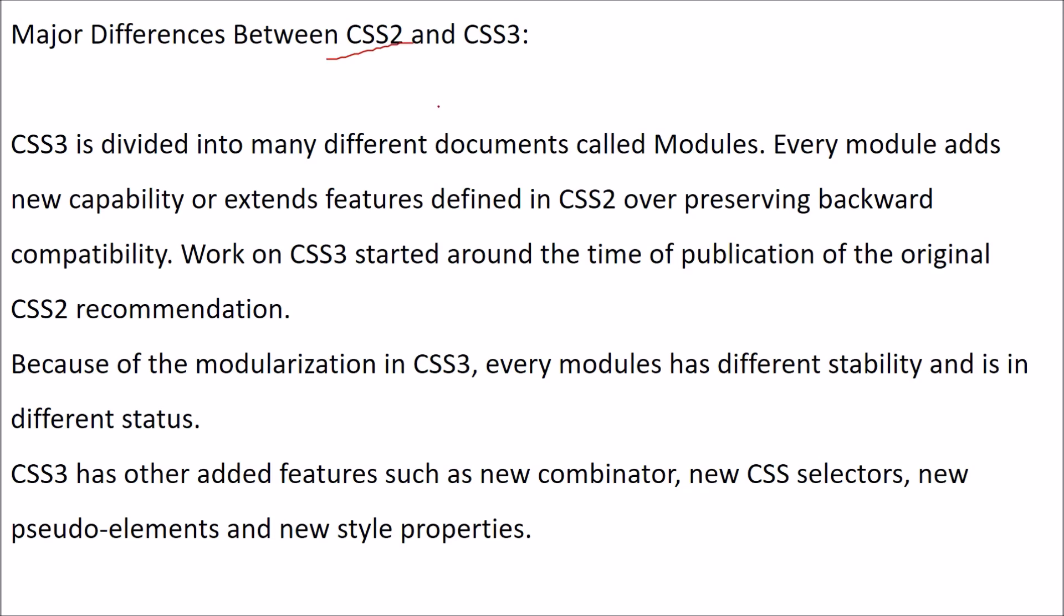The difference between CSS2 and CSS3 is CSS3 is divided into many different modules. Every module adds new capability with backward compatibility. Because of CSS3, every module has stability and status. There are various combinators, selectors, serial elements, and style properties added to CSS3.